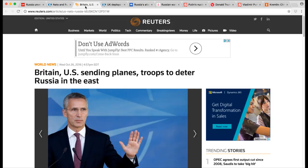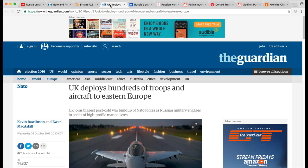The next article we're going to look at, Britain and the U.S. sending planes and troops to deter Russia in the east. This is Reuters October 26th. The next article, UK deploys hundreds of troops and aircraft to Eastern Europe. The Guardian, another article. So here we have a huge military buildup happening before the election.